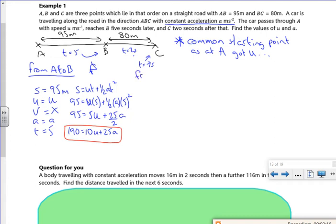Let's have a look from A to C. So my distance is the total distance, that's 175 meters. U is u. V I don't care about. A is a. T is seven seconds.